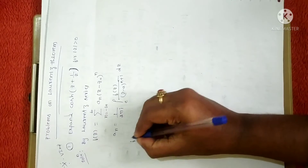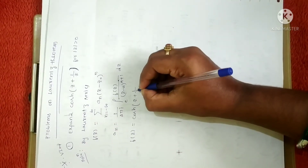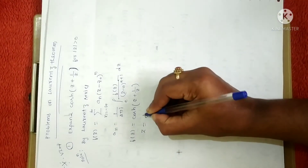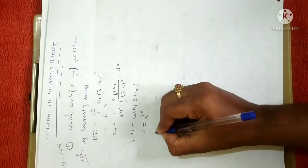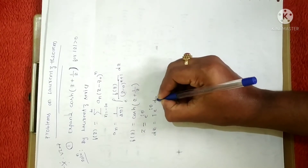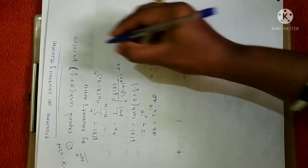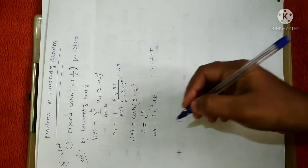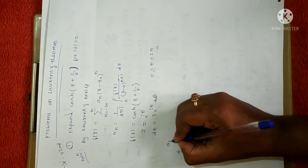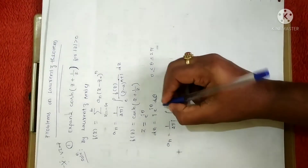Next, consider the given function as f(z). So f(z) = cosh(z + 1/z). Now, z is given by e^(iθ) in terms of complex numbers. Differentiating: dz = i · e^(iθ) · dθ. Moreover, θ ranges from 0 to 2π since the given equation is a circle. Now consider a_n: it is given by (1 / 2πi) · ∫₀²π, because the limits are known to be 0 to 2π as it is a circle.